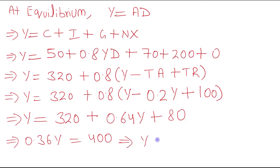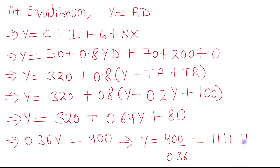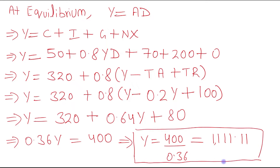Therefore Y equals 400 divided by 0.36, which gives us the equilibrium level of income. Now we need to calculate the multiplier.